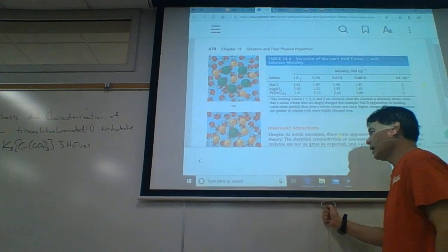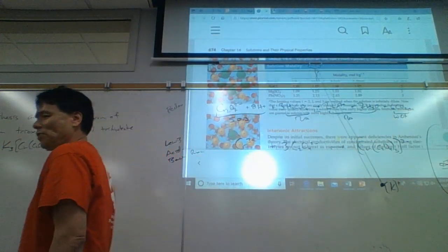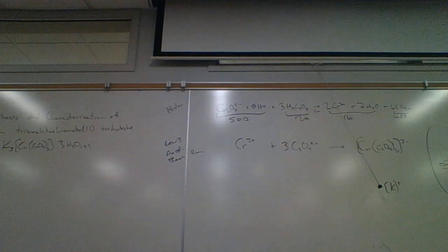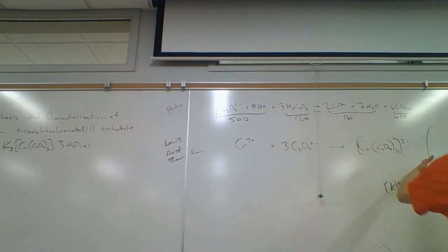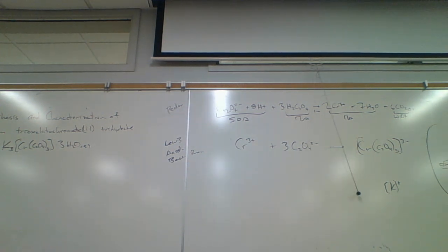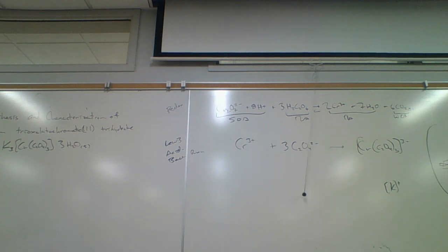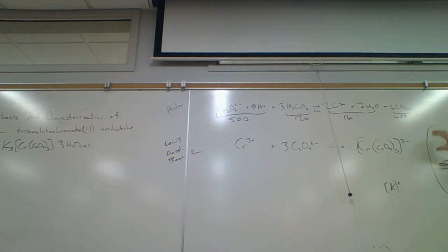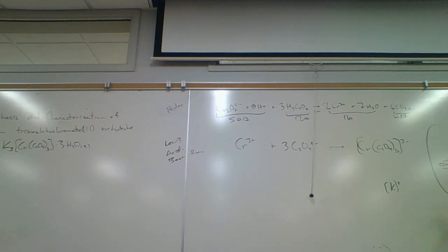Going back to the potassium — even though this complex is pretty highly charged at minus 3, I expect it to be fairly ideal because this is a big ion. The negative 3 is spread out over a large volume, so it's very dilute. Therefore as potassium ions go by this big bulky ion, are they going to be attracted very strongly? No, not so strongly. So this is going to behave fairly ideal.